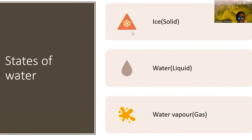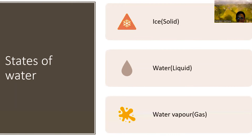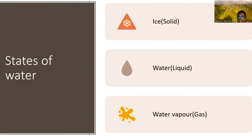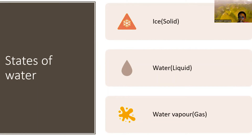States of water: first, ice — which is the solid state. Next, water as liquid, and water vapor as gas. In the previous lesson we learnt about three states of matter as solid, liquid, and gas. But in this lesson, we are learning about the states of water — that are ice, water, and water vapor.